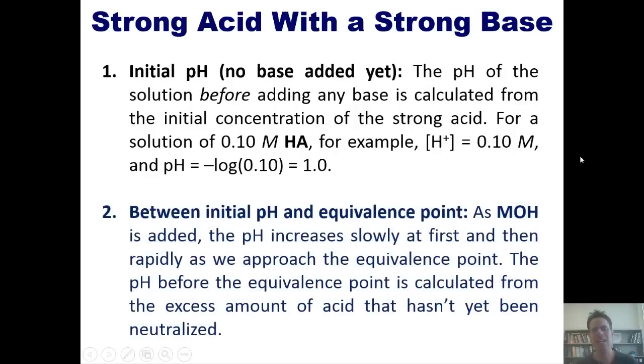The second stage is between the initial pH and the equivalence point. As you add more and more strong base, sodium hydroxide or potassium hydroxide, for instance, the pH increases slowly at first and then rapidly as we approach the equivalence point. The pH before the equivalence point is calculated from the excess amount of acid that hasn't been neutralized, and I'll show you an example of that later on.